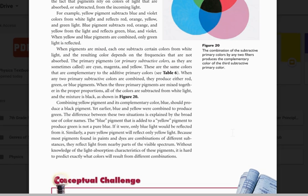The blue pigment that is added to a yellow pigment to produce green is not a pure blue. If it were, only blue light would be reflected from it. Similarly, a pure yellow pigment will reflect only yellow light. Because most pigments found in paints and dyes are combinations of different substances, they reflect light from nearby parts of the visible spectrum. Without knowledge of the light absorption characteristics of these pigments, it is hard to predict exactly what colors will result from different combinations.